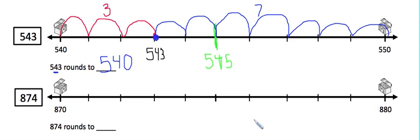Let's try one more example just to make sure you are an expert at this skill. So the next number we're going to try is 874, and we want to round that to the nearest ten — we want to round that seven right there. So first we need to figure out which two tens 874 is in between. Here we can see that 874 is in between 870 and 880.